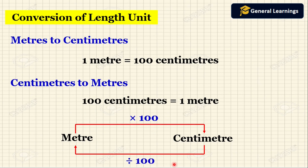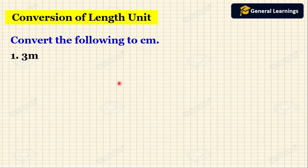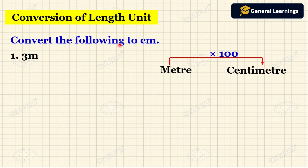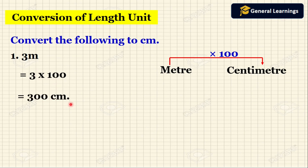Let us do some exercises. Here they have given: convert the following to centimeters. So we are going to convert from meters to centimeters. Here they have given 3 meters. To convert from meters to centimeters we need to multiply by 100. So 3 into 100, we get 300 centimeters. So when converting 3 meters we get 300 centimeters.